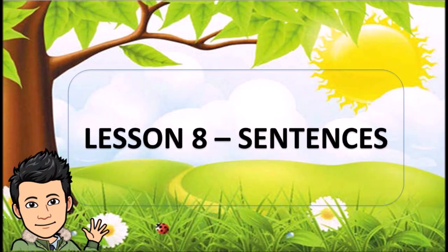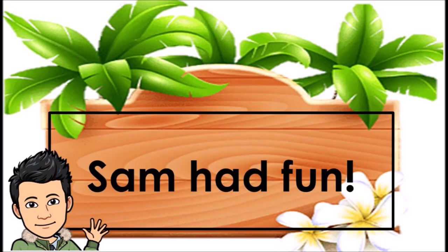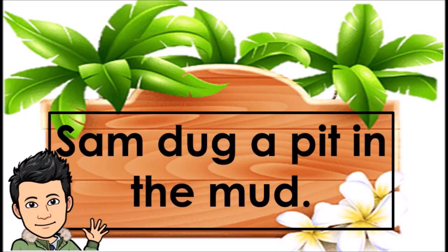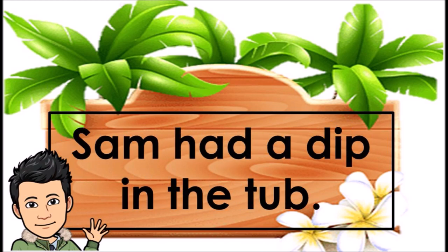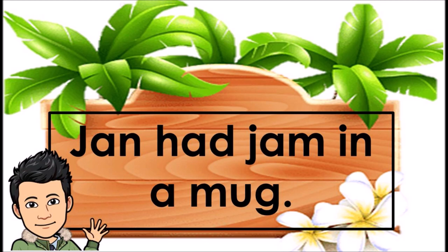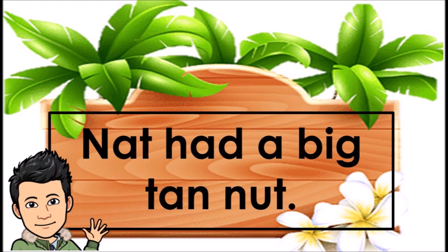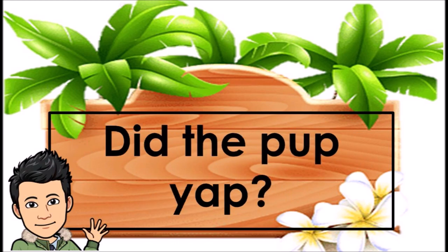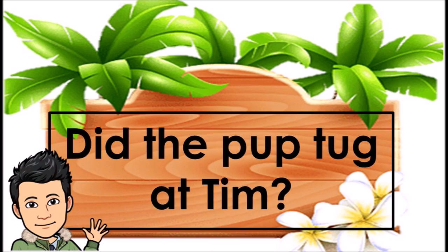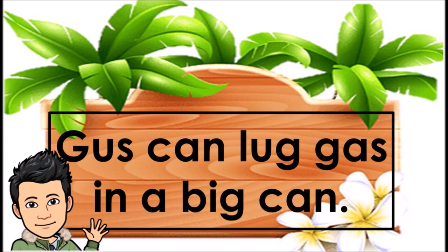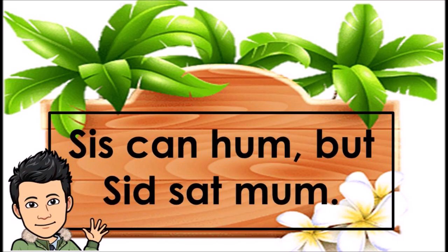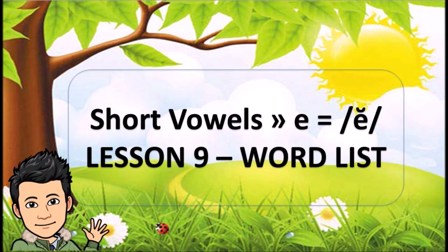Lesson 8. Sentences: Sam had fun. Sam dug a pit in the mud. Sam had a dip in the tub. Jan had jam in a mug. Bud had a bug in a jug. Nat had a big tan nut. Did the pup yap? Did the pup tug at Tim? Gus can lug gas in a big can. Sis can hum, but Sid sat mum. Short vowels: E equals E.